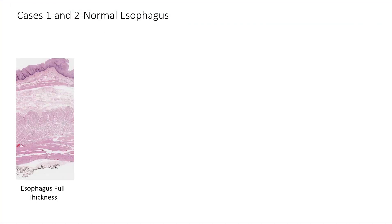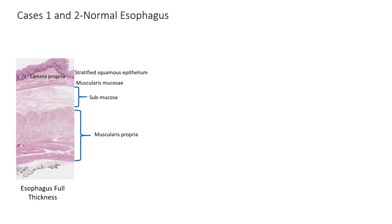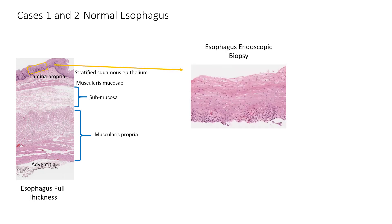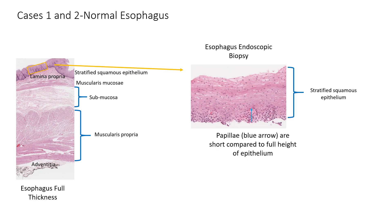Cases 1 and 2 are normal esophagus. Here is our full thickness section with the stratified squamous epithelium, lamina propria, muscularis mucosa, submucosa, muscularis propria, and adventitia. Here is our endoscopic biopsy, which consists only of the squamous epithelium. The blue arrow points out the length of a papilla — these are quite short compared to the full thickness of the epithelium, which is normal. Remember, endoscopic biopsies only sample superficial tissues and do not sample full thickness, because that would produce a hole in the gastrointestinal tract.